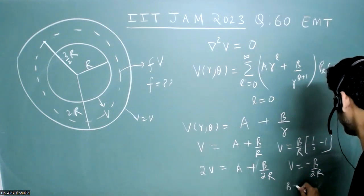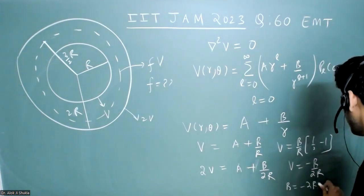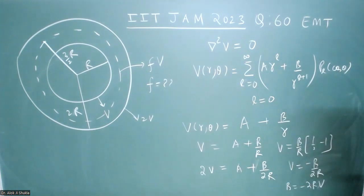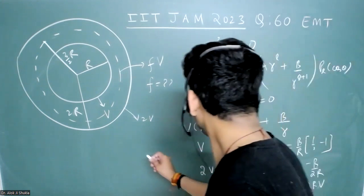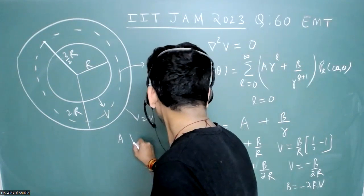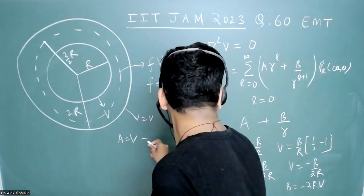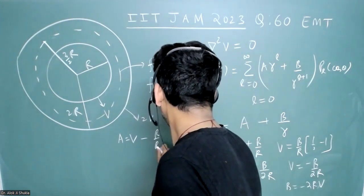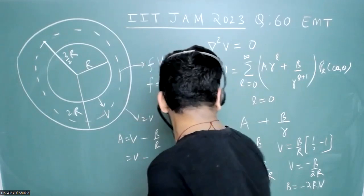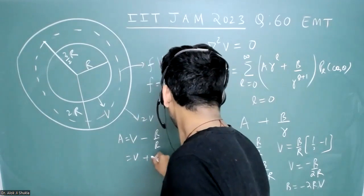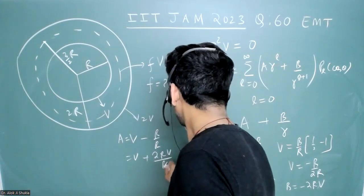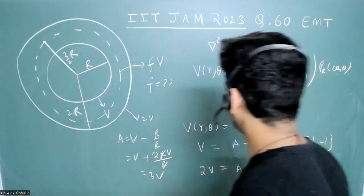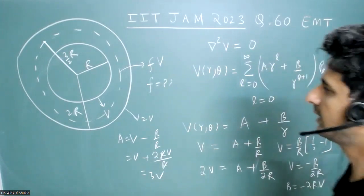b is minus 2r times capital V. And what is the value of a? Put it somewhere here. So a is equal to v minus b/r, which is v minus (minus 2rV)/r. So r and r cancel, a will be equal to 3v.